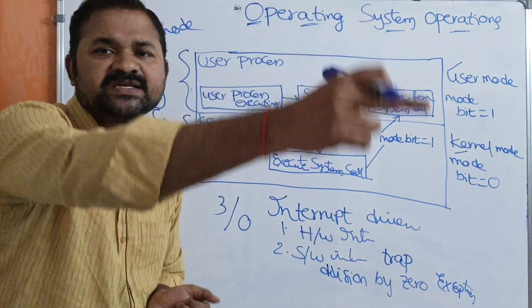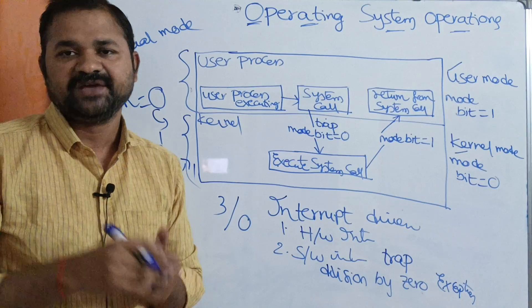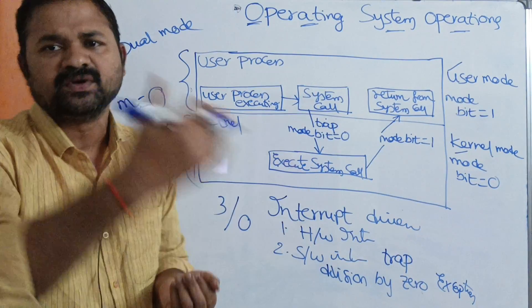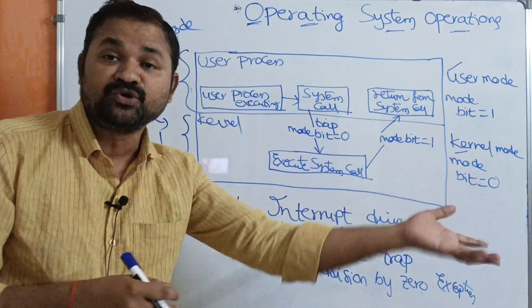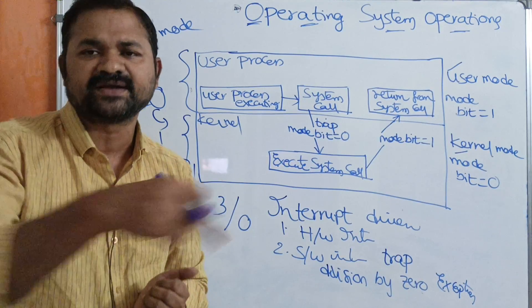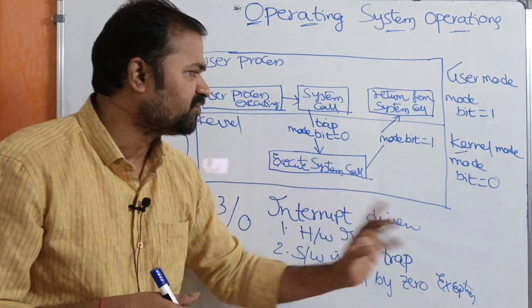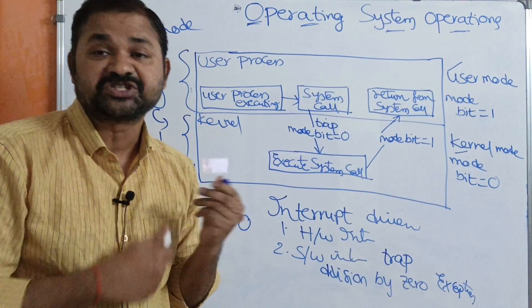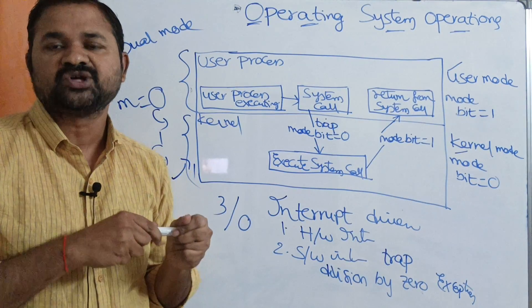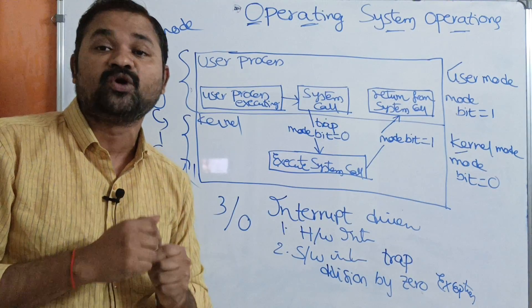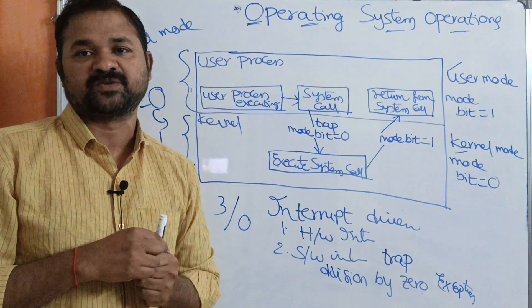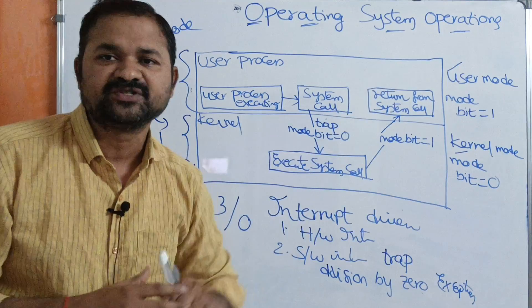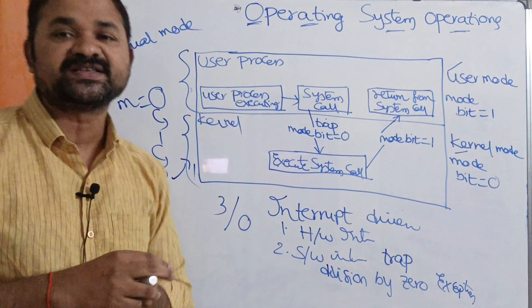When the mode bit is one, the CPU executes only the user process, and that process cannot access the operating system. If we want to execute the content of the operating system, the operating system changes the mode bit from one to zero so that the CPU starts executing the content of the operating system. To summarize: OS operations means dual mode operations — user mode with mode bit one, and kernel mode (OS mode) with mode bit zero.